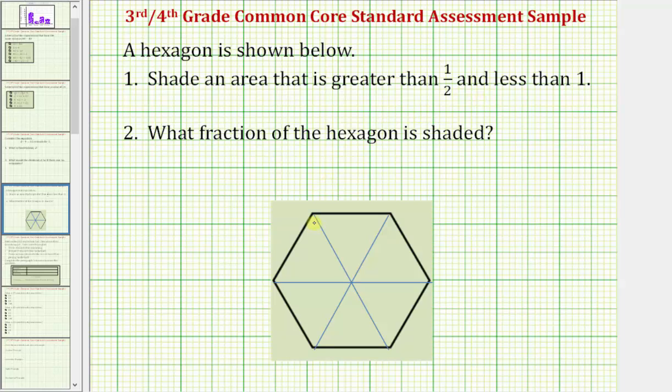Let's begin shading. So this would be one-sixth, which is not greater than one-half and less than one, so we keep shading. This is one-sixth, and now we have two-sixths, which is still not greater than one-half and less than one.